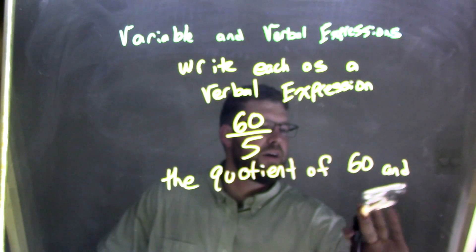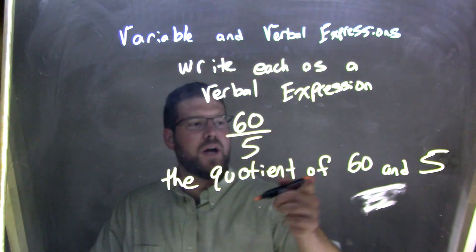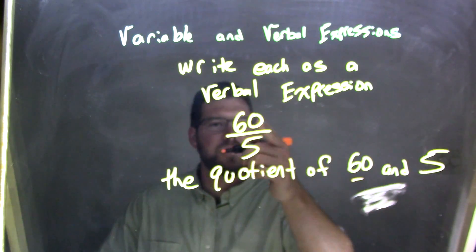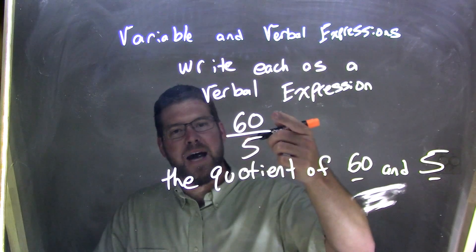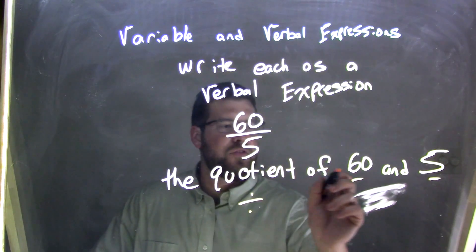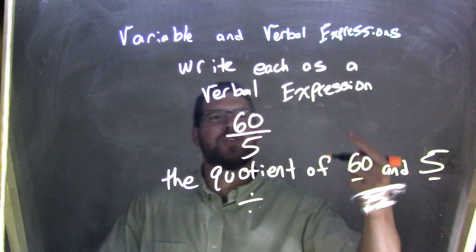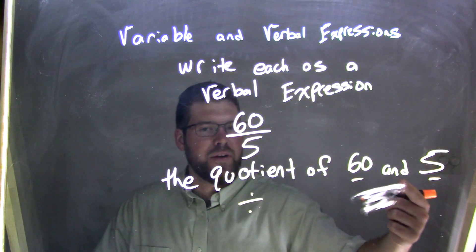Actually 5 fits right here to the side, 60 and 5. So the quotient of 60 and 5. 60 came first, and 5 referring to these two numbers in that order from top to bottom. So the quotient, meaning that division of 60 and 5. We took that variable expression and wrote it as a verbal expression.